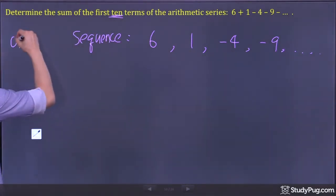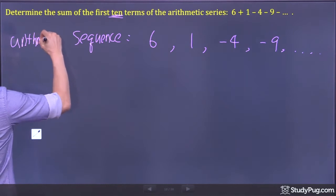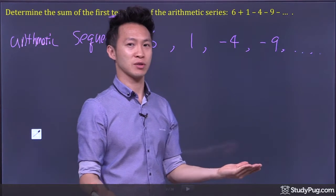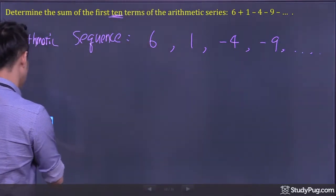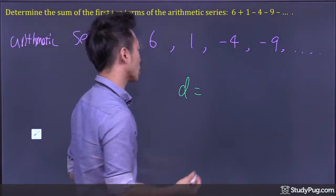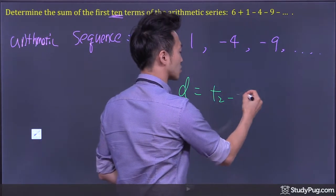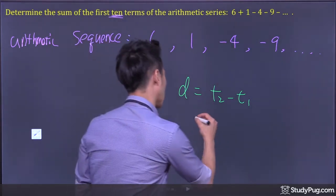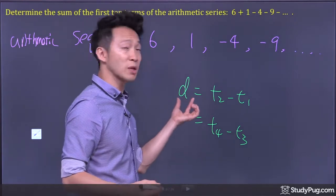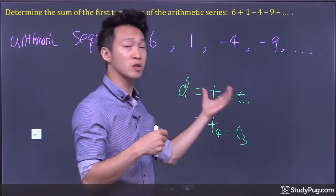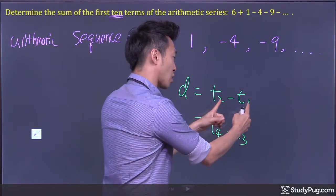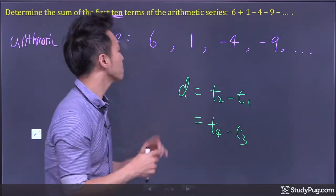An arithmetic sequence is a sequence with a common difference. To find the common difference, we subtract a pair of consecutive terms — it doesn't matter which pair we choose, as long as the terms are right next to each other.